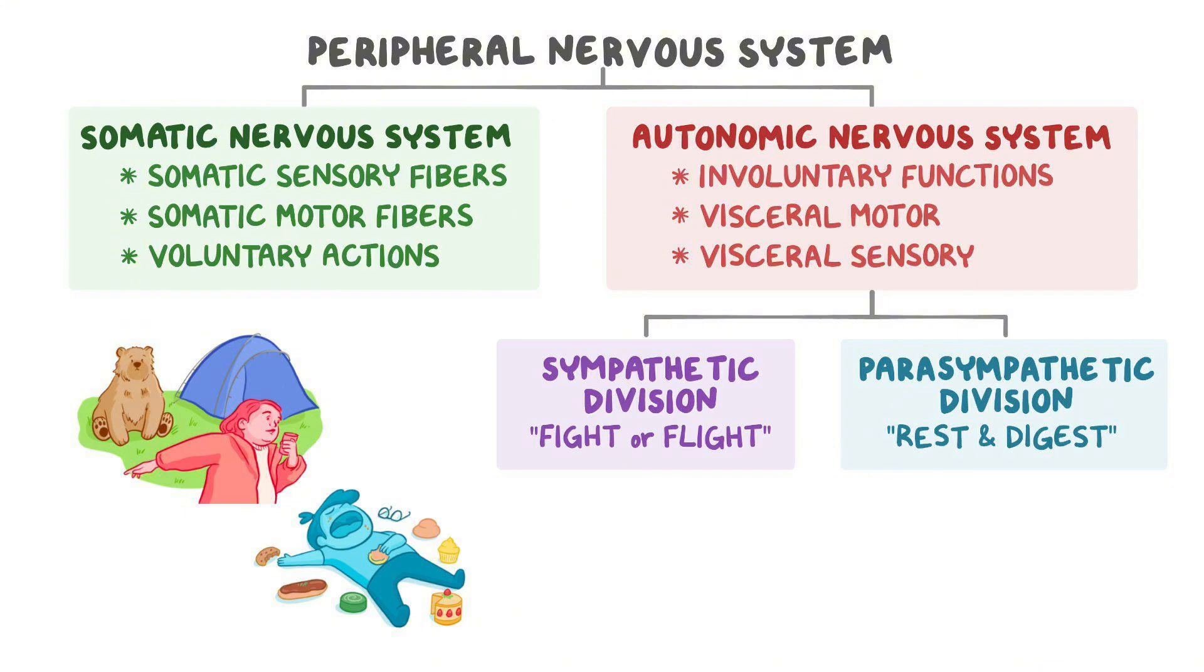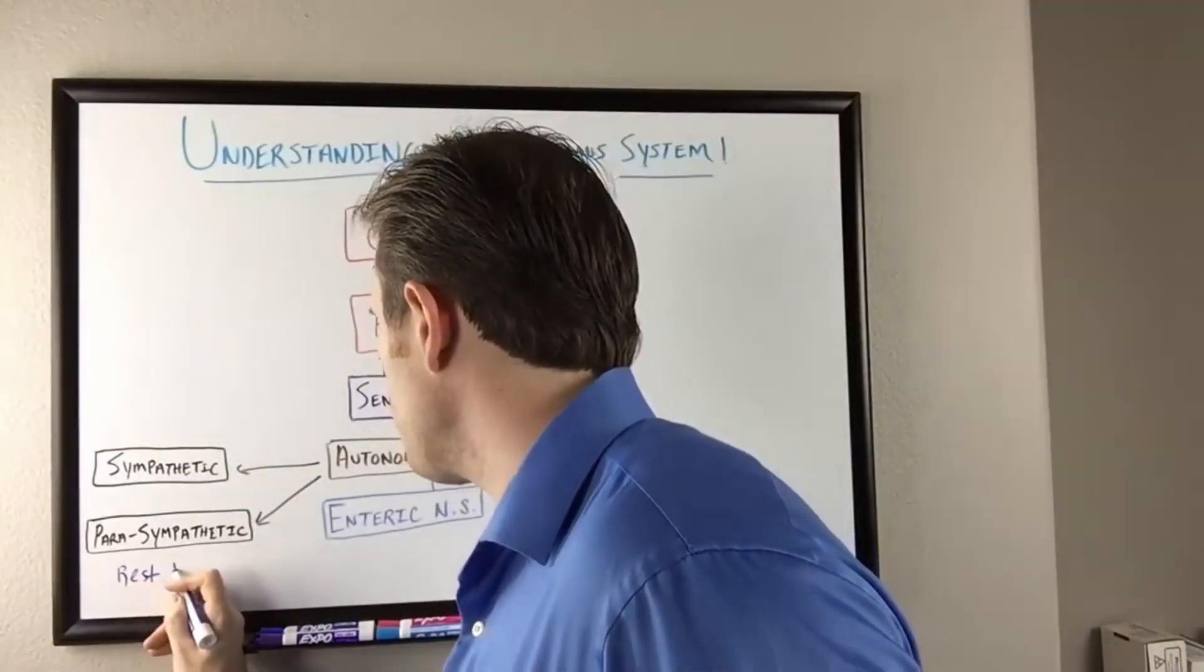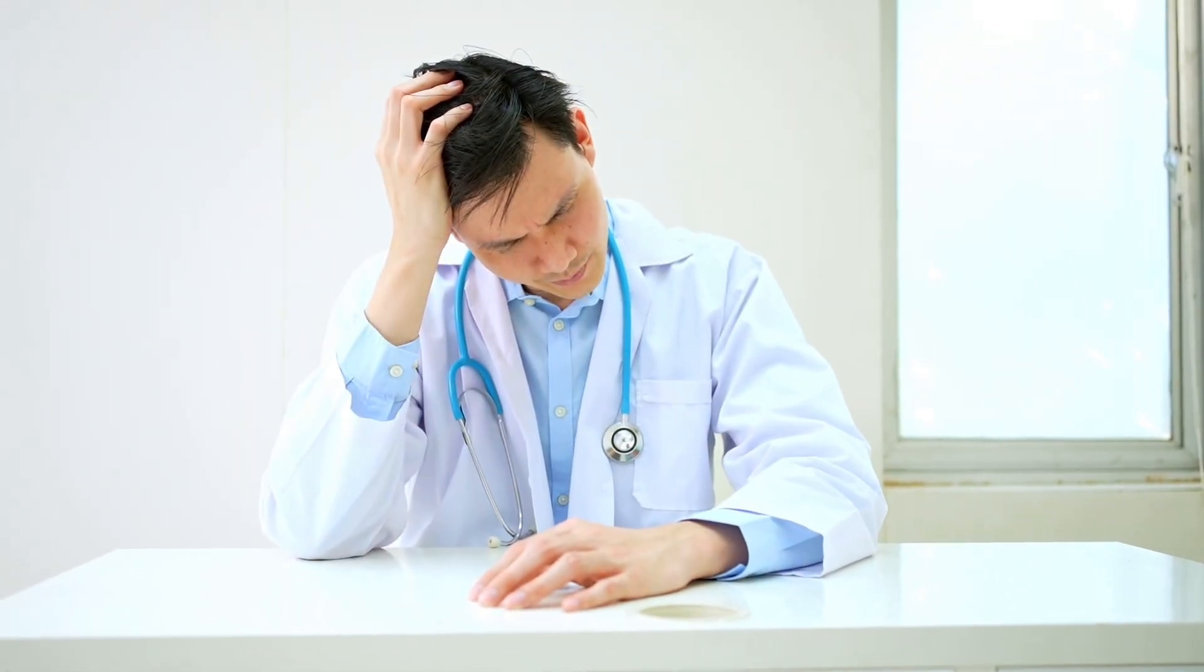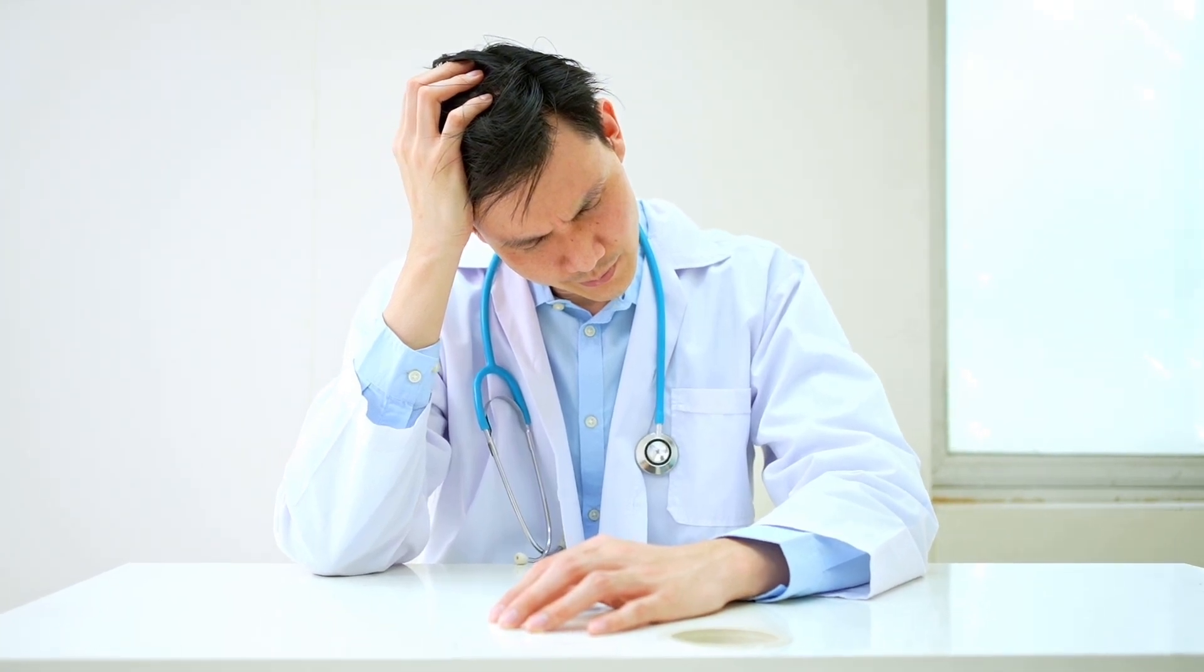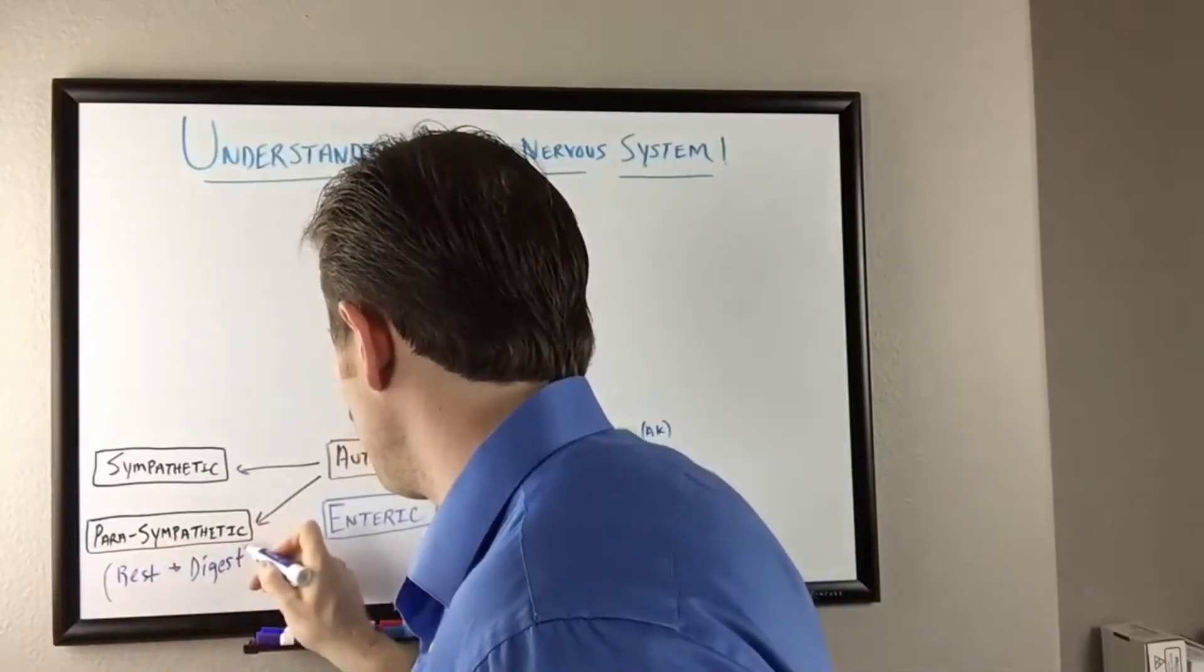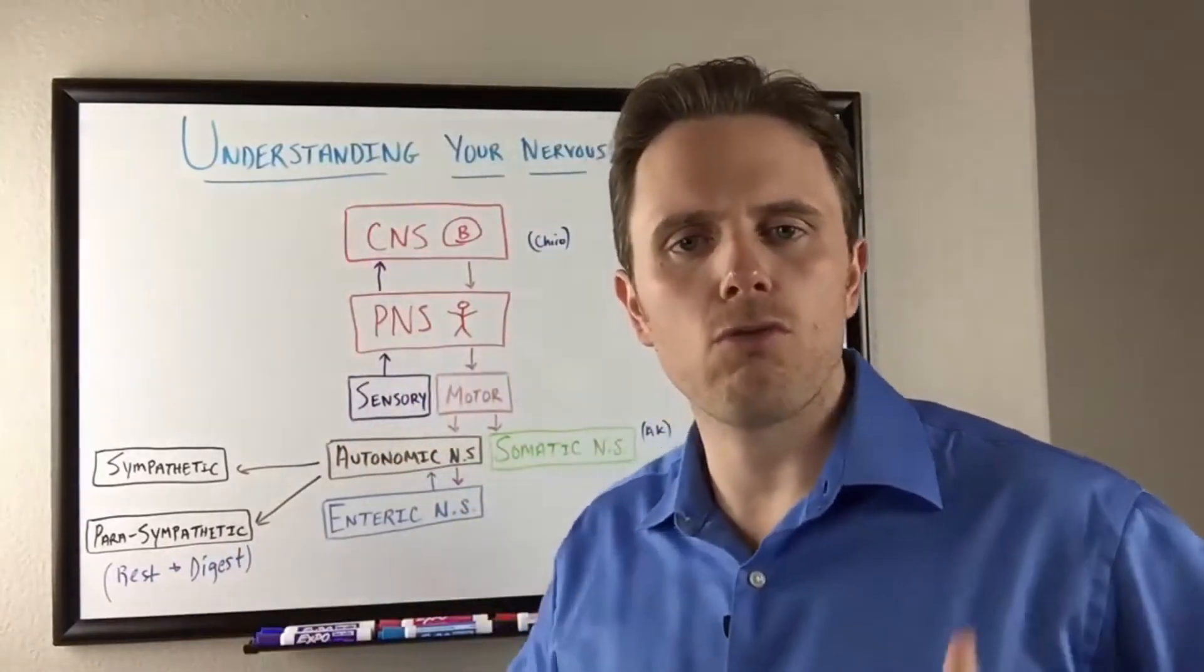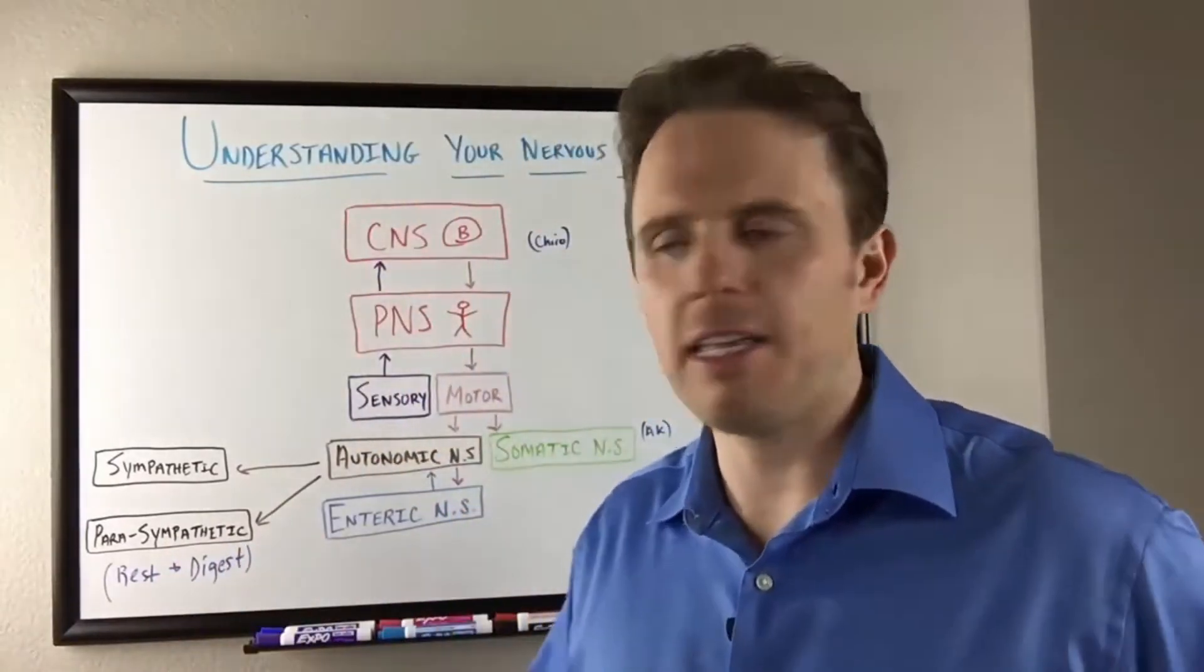Our parasympathetic is like the rest and digest. This is really important for repairing and healing. Most people are so stressed, this branch of the nervous system is really fatigued. In this part of the nervous system, you're going to have growth hormone, DHEA, hormones that are proliferating to help your body heal.